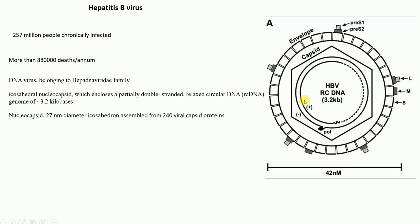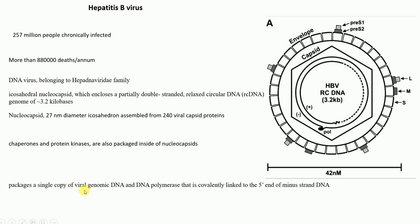This hepatitis B virus belongs to the Hepadnaviridae family - this one you have to remember. In addition, the nucleocapsid also contains chaperones and protein kinases that are packaged within the nucleocapsid. The genome of hepatitis B virus is a DNA, and it's a circular, relaxed DNA which is partially double-stranded. It is covalently linked at the 5 prime end at the minus strand, and the polymerase is linked at the minus strand.